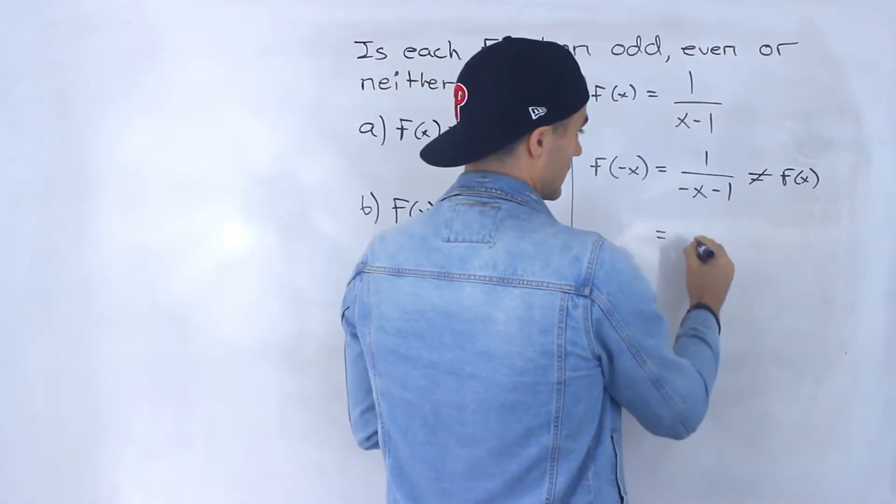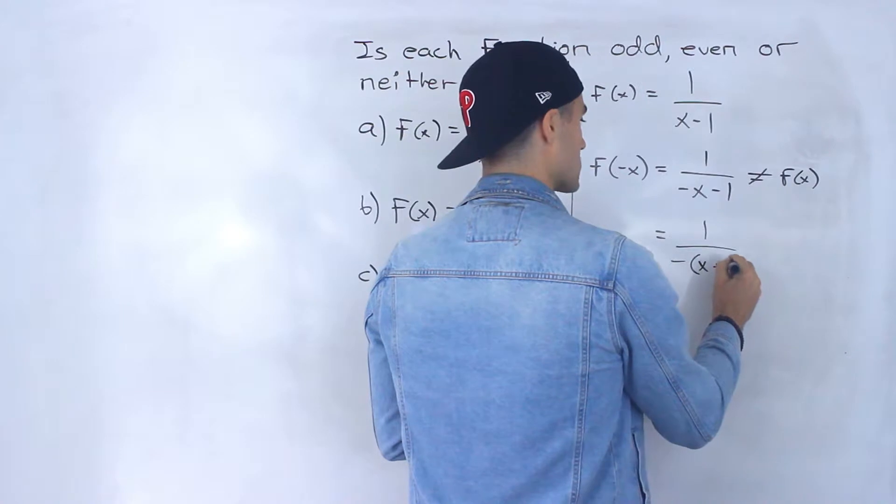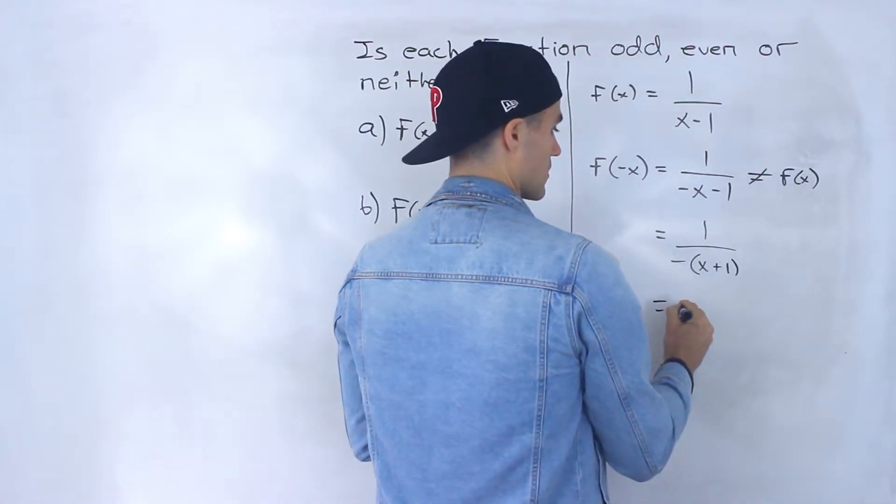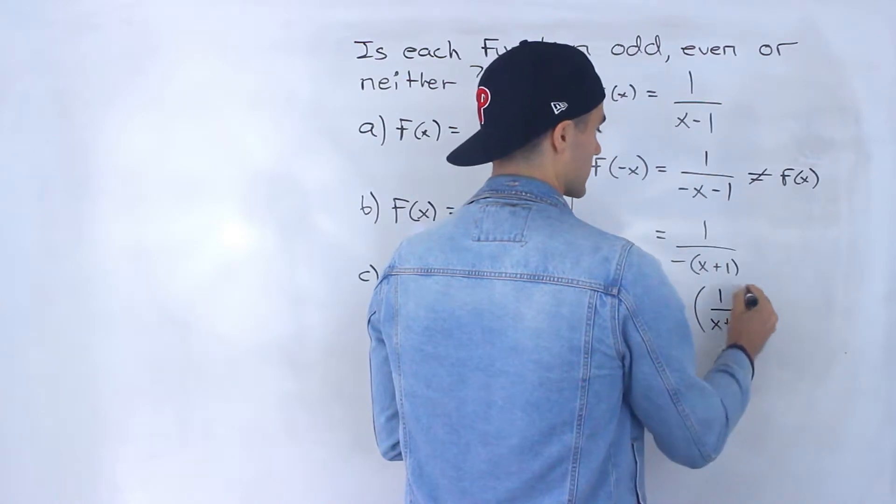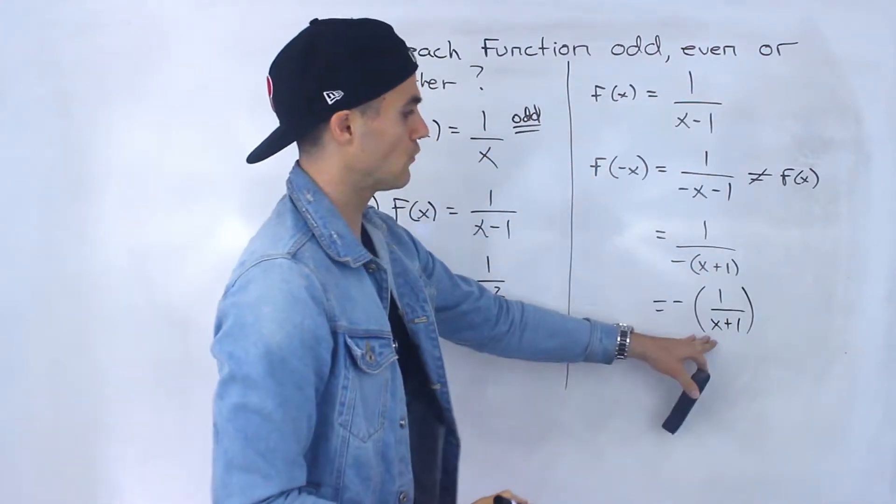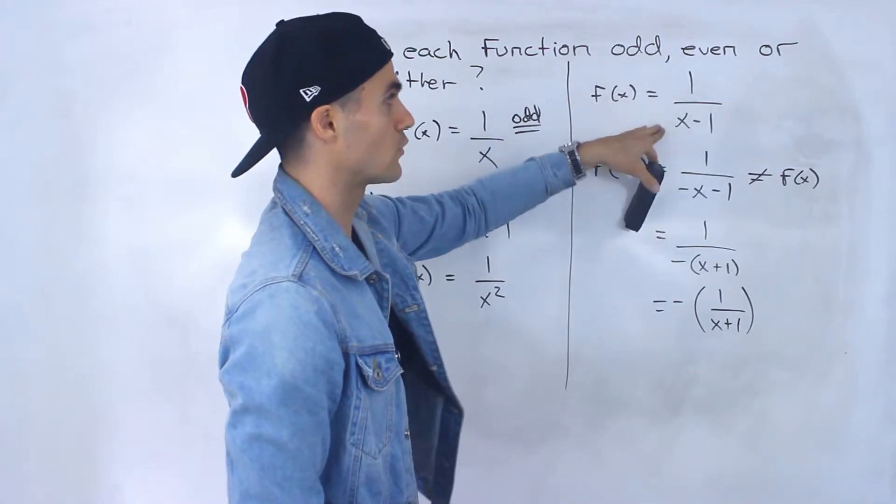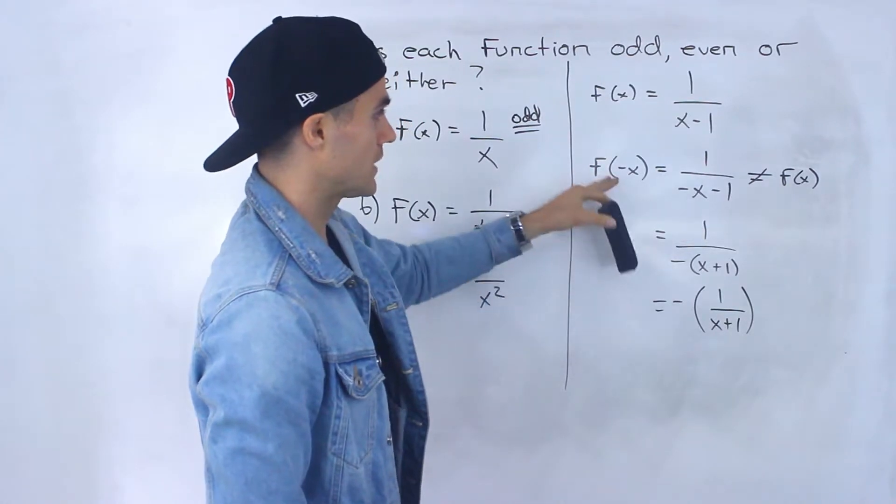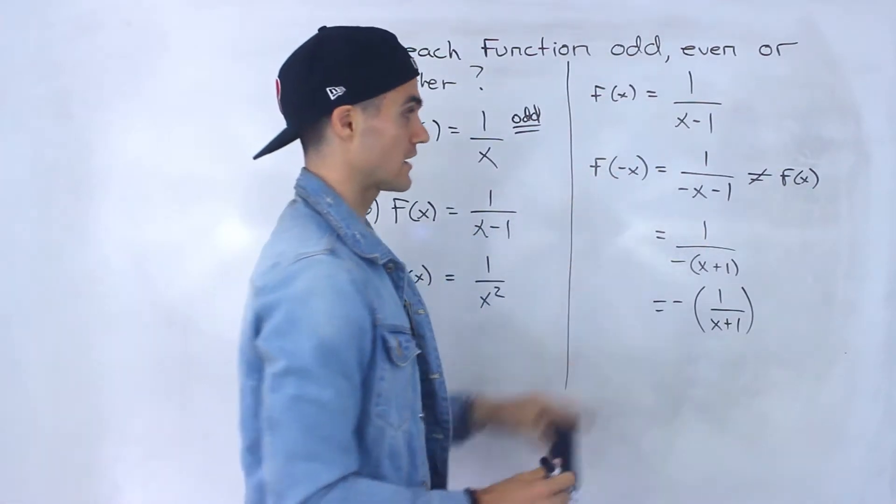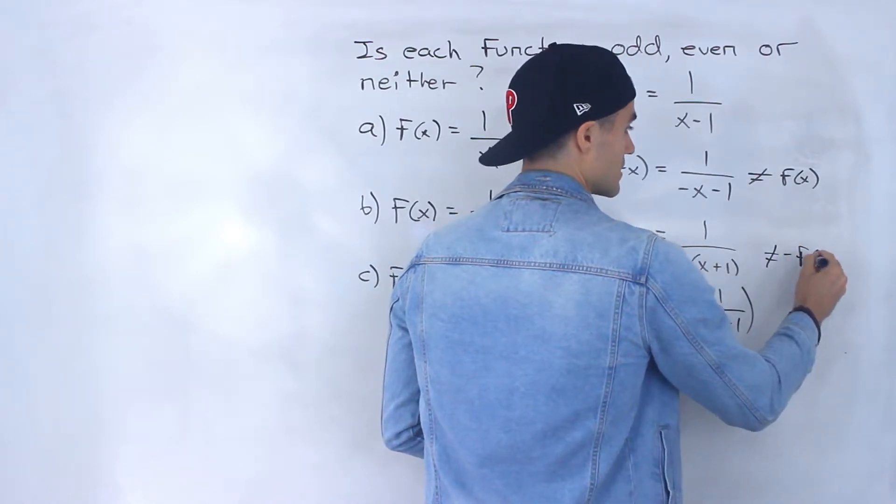But notice if we factor out a negative in the denominator, we would end up with x plus 1. So we could put that negative in front, end up with 1 over x plus 1. But notice 1 over x plus 1, that doesn't equal f of x, because f of x is 1 over x minus 1. Right? So it doesn't seem like we can take this, f of negative x, and make it equal to negative f of x either.